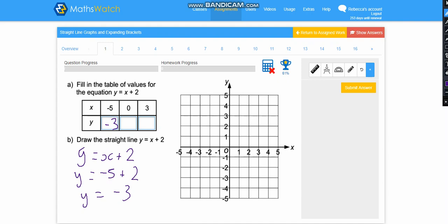Then I can just put that where y is because I know that when x equals minus 5, y equals minus 3. So now I can do the same for 0. If x is 0, I can put 0 plus 2, so I know that y equals 2 when x equals 0.